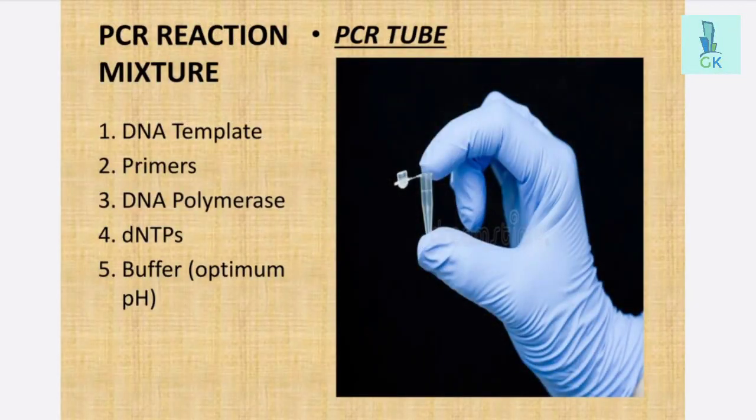When we use this technique, we have to prepare our reaction mixture. There we have to take DNA template, primer, DNA polymerase which has to be thermostable because this reaction will run at high temperature, dNTPs and buffer. After preparing this reaction mixture, we have to transfer this into PCR tube as shown in the slide. After that we have to put this PCR tube in machine for running the reaction.